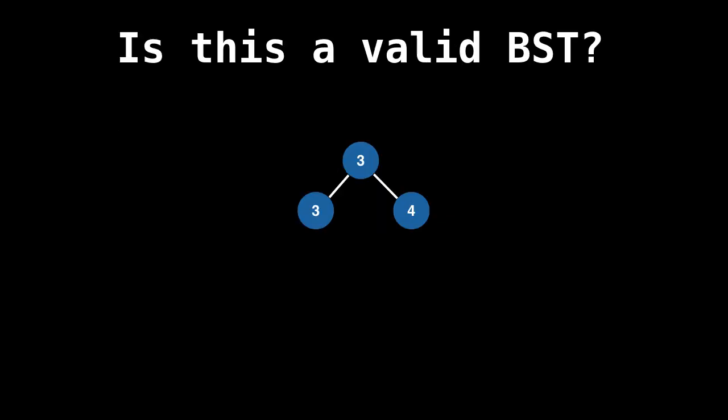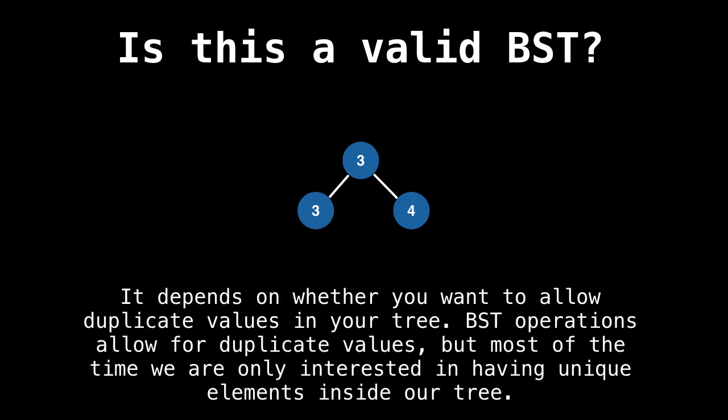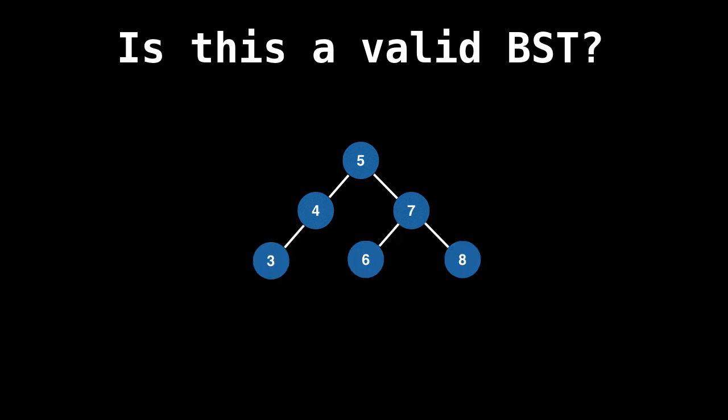We're going to play the same type of game. I'm going to give you some trees, and you have to guess whether they're binary search trees or not. What about this structure? This one, we could say it depends on whether you want to allow duplicate values inside your tree. Binary search tree operations allow for duplicate values. There's nothing wrong with that. But most of the time, we're only interested in having unique values inside our tree. So this particular tree depends on what your definition of a binary search tree is.